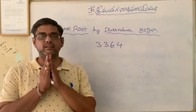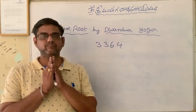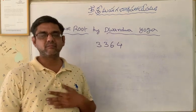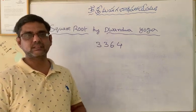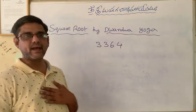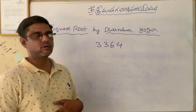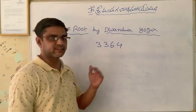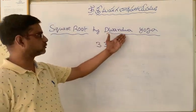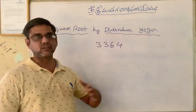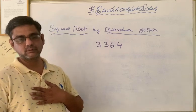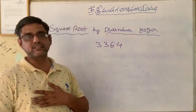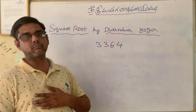Om Shri Mahagana Dupataye Namah. Hi my dear friends and my dear students. Today I am going to explain finding the square root of a 4-digit number by using Vedic Sutra Dvandvayoga. As you know, the meaning of Dvandvayoga is by squaring and by doubting.